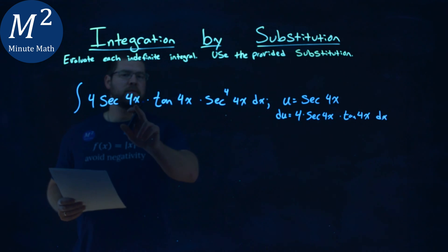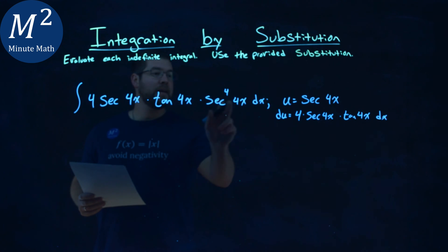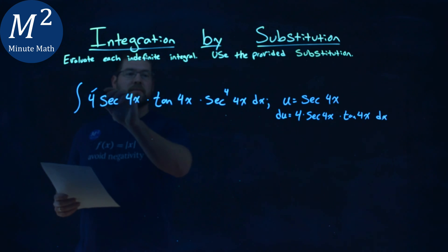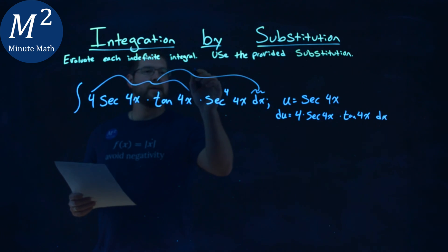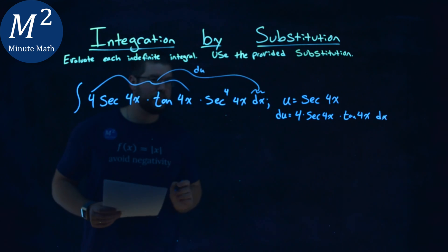Notice we have 4 secant 4x tangent 4x dx, which is just that du right here. Put that together - that's the du.